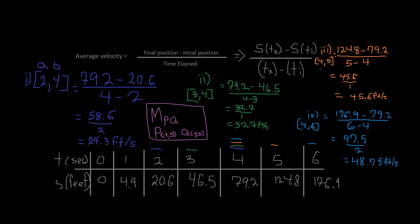Here's the next one. Time interval of 4 to 5 ends up getting us 45.6 feet per second. Here's the time interval for 4 to 6, and that ends up getting us 48.75 feet per second.